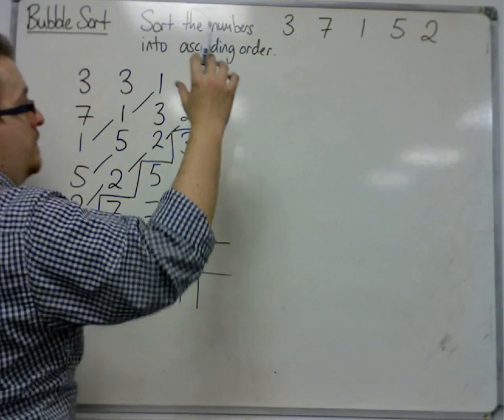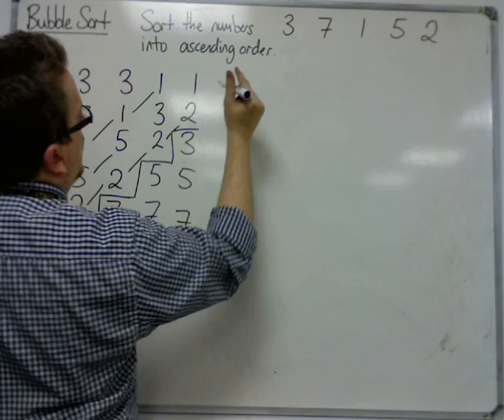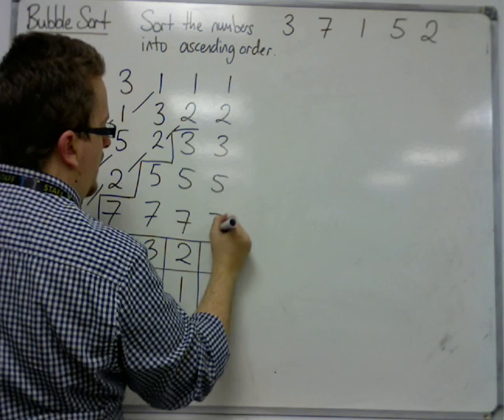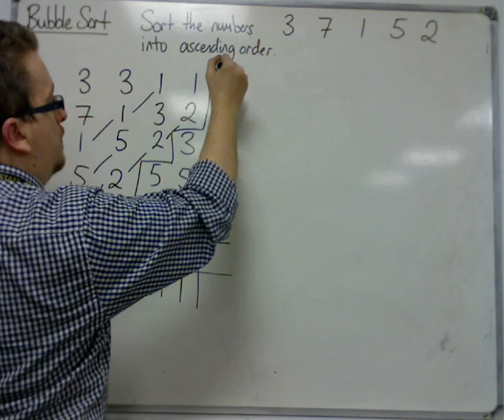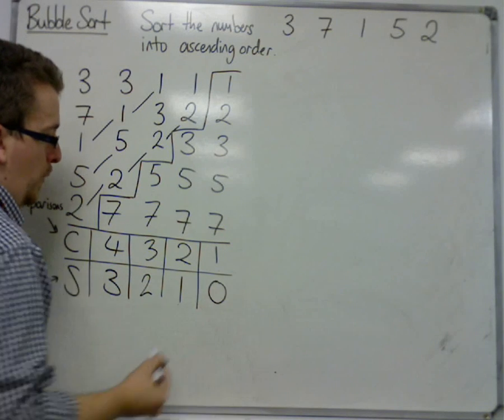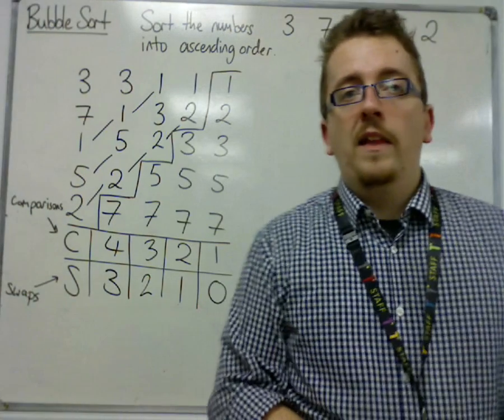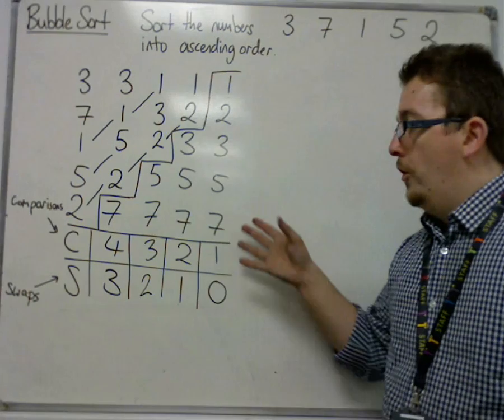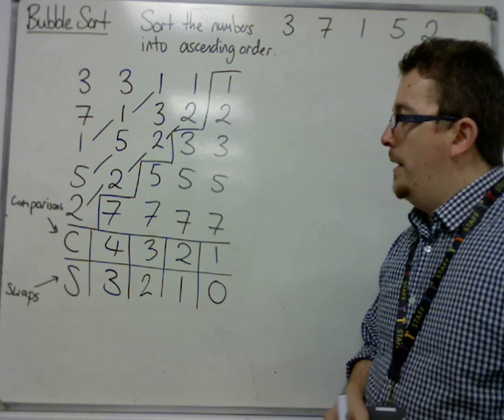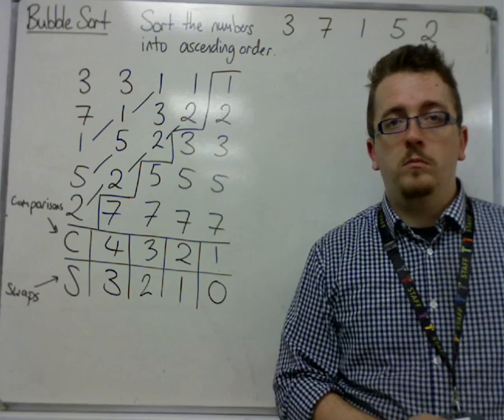And finally, 1 and 2 need to be compared. They're in the correct order. So once everything's in the correct order and there's been no swaps, we can box off the list. So you made 1 comparison, 0 swaps, and we are done. And this is an example of using bubble sort. In the next video, I will show you a second example.